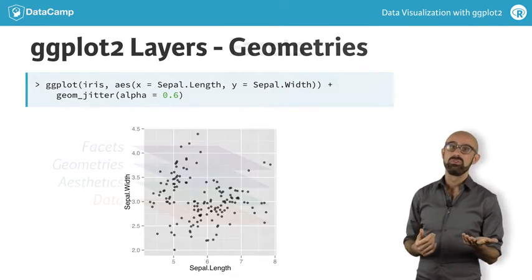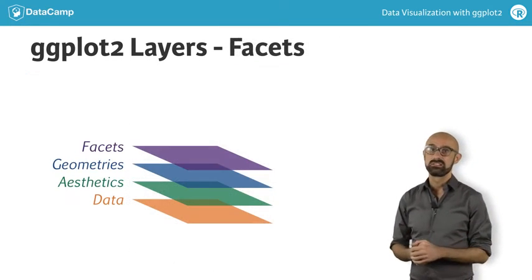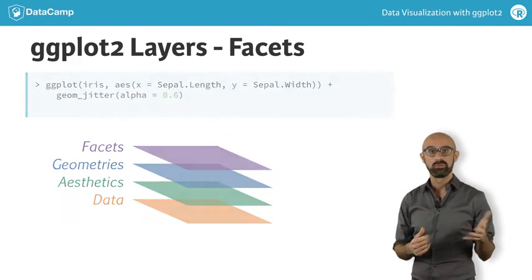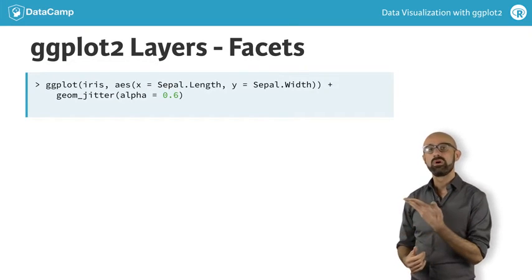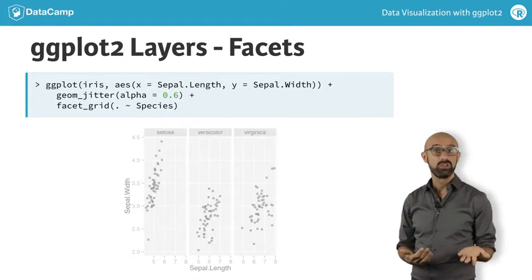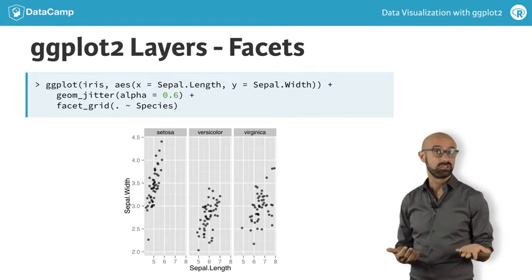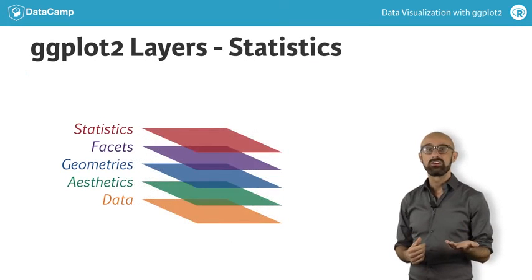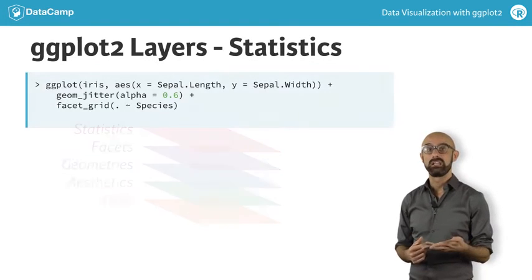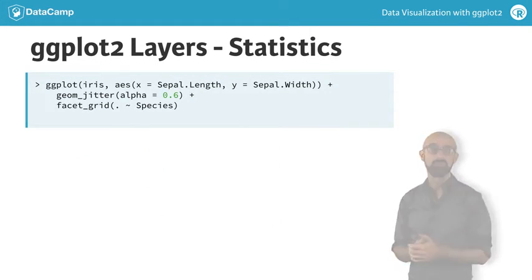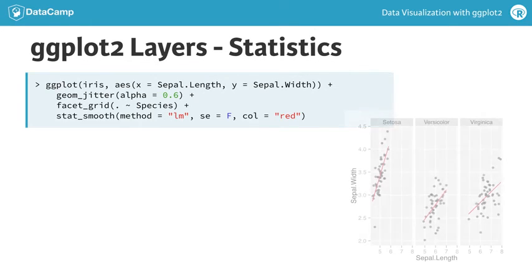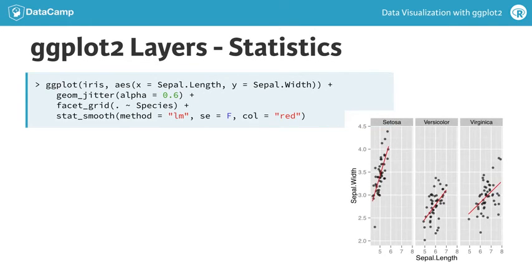The next layer we'll use is facets, which dictates how to split up our plot. In this case, we want to make three separate plots, one for each of the species under consideration. The statistics layer can be used to calculate and add many different parameters. For example, here we've chosen to add a linear model to each of the three subplots.